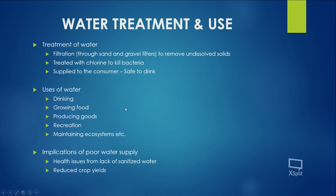The treatment of water includes filtration through sand and gravel to remove undissolved solids, followed by treatment with chlorine to kill bacteria, making it safe to supply to consumers. Uses of water include drinking, growing food, producing goods, recreation, and maintaining ecosystems. Poor water supply leads to health issues from lack of sanitized water and reduced crop yields, since water is essential for plant growth.